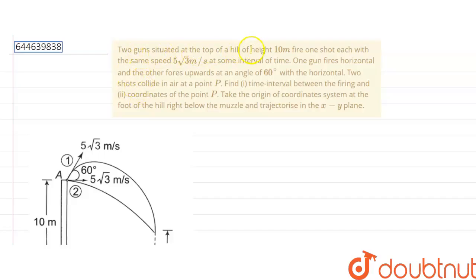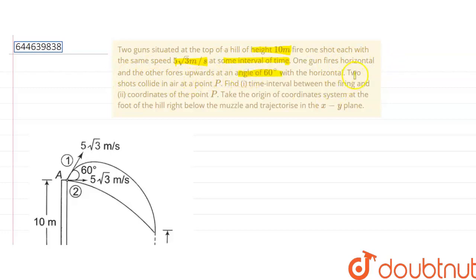The given question is: two guns situated at the top of a hill of height 10 meters fire one shot each with the same speed 5√3 meters per second at some interval of time. One gun fires horizontally and the other fires upward at an angle of 60 degrees with the horizontal. The two shots collide in air at a point P.